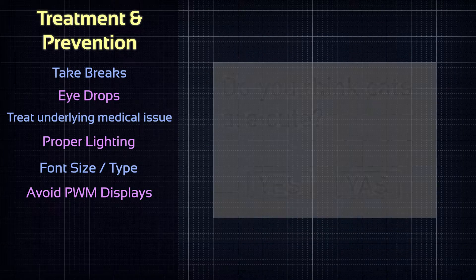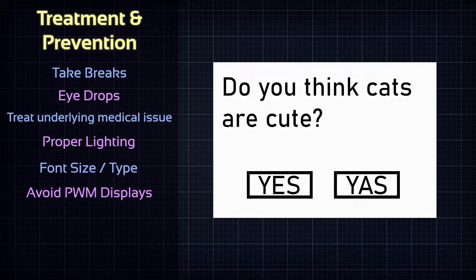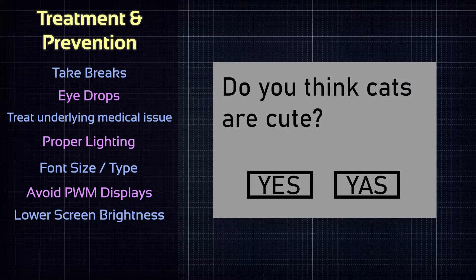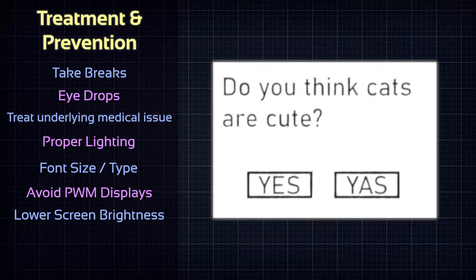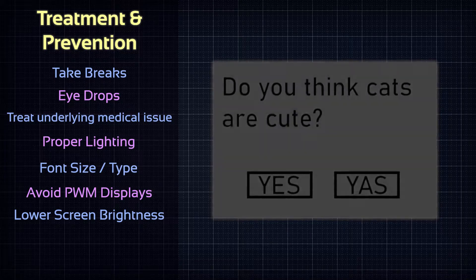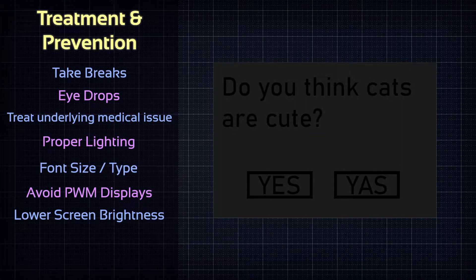Fortunately nowadays most screens use DC modulation and are therefore flicker-free. And so one thing you can do to reduce the strain on your eyes is to lower the brightness of your devices. By how much depends on the screen though. You want to lower it so that the brightness isn't that jarring anymore, but not too much, otherwise the screen will lose too much contrast and tasks like reading will become more straining again.